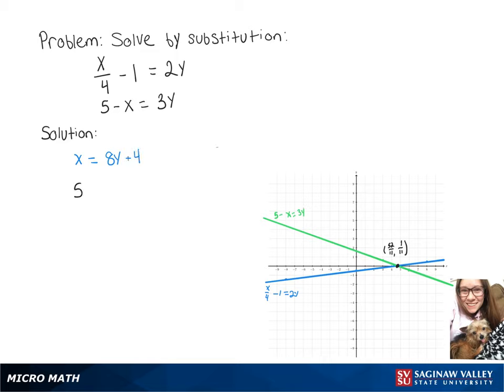Now we can put that value of x into the second equation, so we've got 5 minus 8y plus 4 equals 3y.